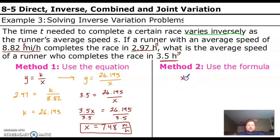Really quickly, using the formula, it's x1, y1 equals x2, y2. And so we just need x1, y1, those first two, and then we've got our y2, and we're solving for our x2. So 8.82 times 2.97 is equal to x2 times 3.5. Divide by 3.5. Type that into your calculator, and you end up with the same answer as over here.